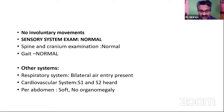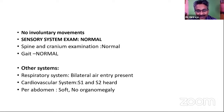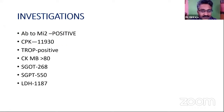Approaching muscle disease: come from cortex to muscle or muscle to cortex, ruling out each level based on history, mode of onset, and examination. Investigations: antibody to MI2 is positive. CPK is 11,930. Troponin positive, CKMB more than 80, SGOT 268, SGPT 550, LDH 787. Antibodies sent in dermatomyositis include MDA5 (melanoma differentiating antigen 5), TIF-1 (transcriptional intermediary factor 1), NXP2 (nuclear matrix protein 2), and MI2. Here MI2 became positive.